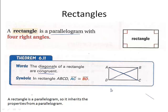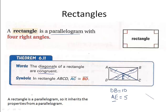So if DB measures 10, what does AE measure? Let's call the intersecting center point E. AE will measure 5. Because if DB is 10, then AC is also 10 — this is a rectangle. The diagonals bisect each other, so each half is congruent. Half of AC, which is AE, is going to be 5.